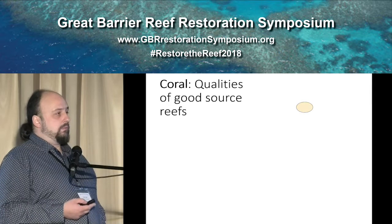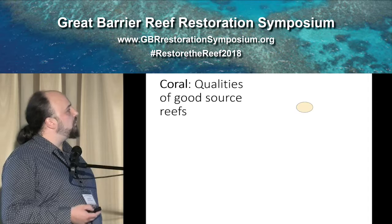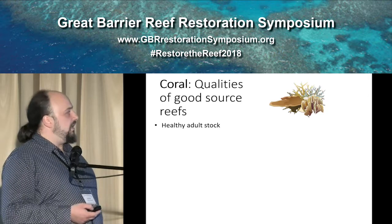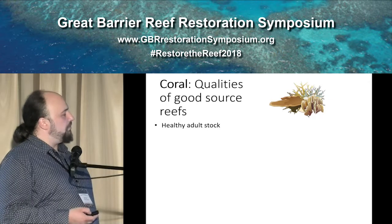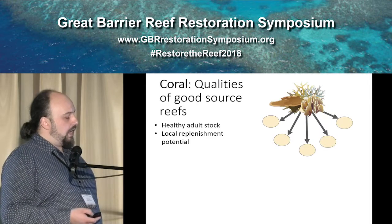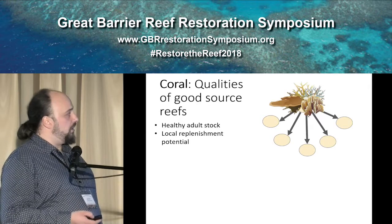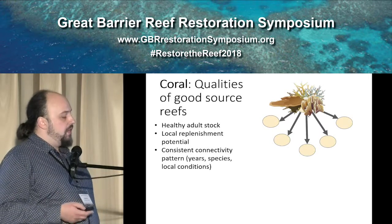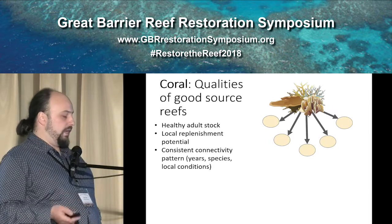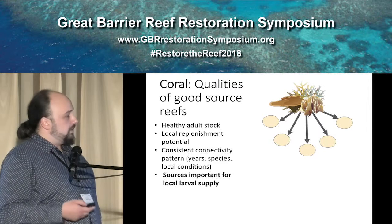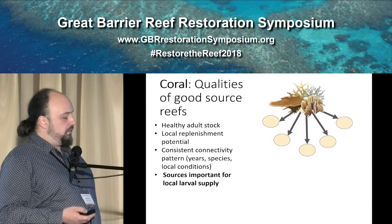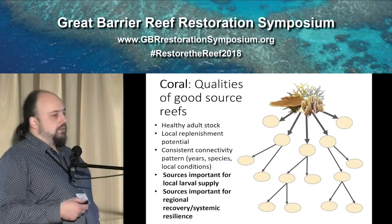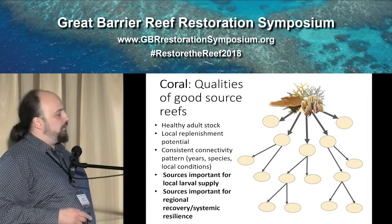In more detail, what we are looking for when we talk about corals: we are looking for quality source reefs, which means they need to have healthy adult stocks — and unfortunately connectivity models can't tell us that, so we sometimes have to assume that reefs actually have coral stocks. What we are looking for is reefs that have high local replenishment potential, meaning they can export lots of larvae to lots of reefs, and they can do this consistently over different years, and preferably for different species and under different local conditions. Reefs that can do this consistently are important for local supply, but we can also look at sources important for regional recovery — reefs that supply other reefs that are themselves going to be sources, thereby promoting recovery in the wider region.